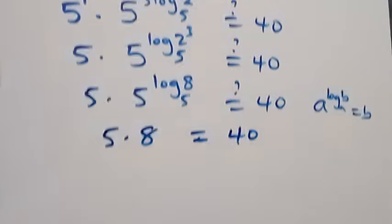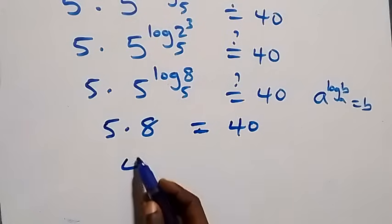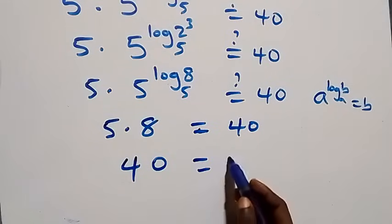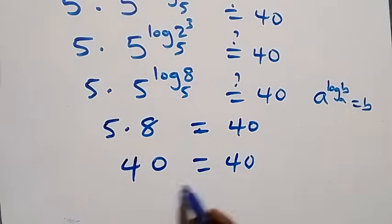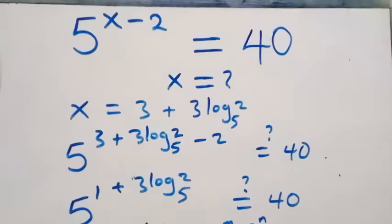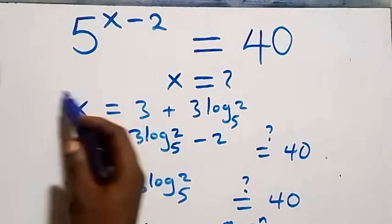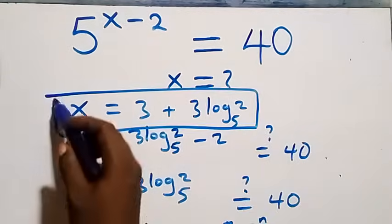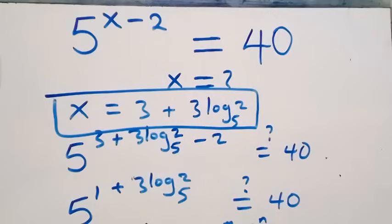So we have 5 times 8, which equals 40. The left-hand side equals the right-hand side, so we conclude that x equals 3 plus 3 log₅ 2 satisfies the given problem. Thank you for watching at Mustard — see my class. Don't forget to subscribe for more videos, turn on the notification bell, share this video, give it a thumbs up, and see you next class. Bye for now.